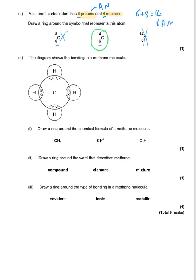The diagram below shows the bonding in a methane molecule, with circles showing dots and crosses and chemical symbols. The question asks: draw a ring around the chemical formula for the methane molecule. There is one carbon and four hydrogen atoms, so the formula is CH4, with a small subscript four on the line. One of the wrong options has the four up in the air like a power — numbers should be subscript, not superscript. The other wrong option has the number before the carbon, suggesting four carbon atoms, which is incorrect. So the answer is the left-hand one with the numbers nicely down on the line.